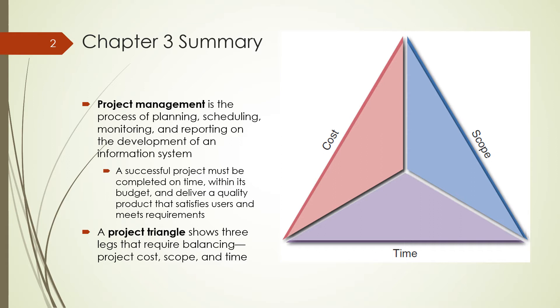A project triangle shows three legs that require balancing: project cost, scope, and time. If you change any one of these, it'll impact the other two. For example, if you increase the scope of a project, most likely it will increase the cost of the project and also increase the time it takes the project to be completed.